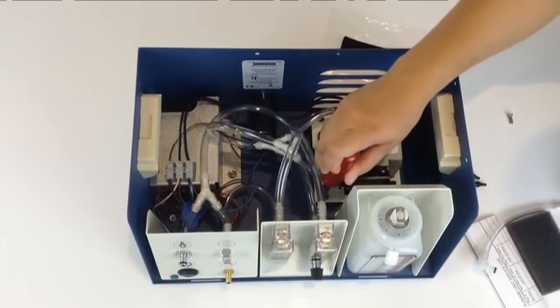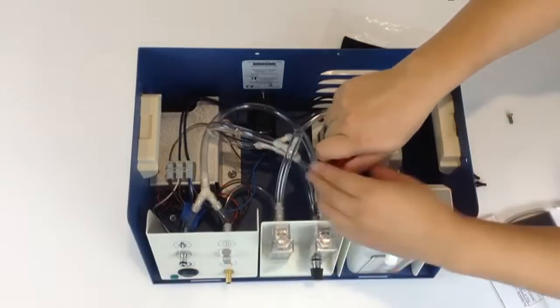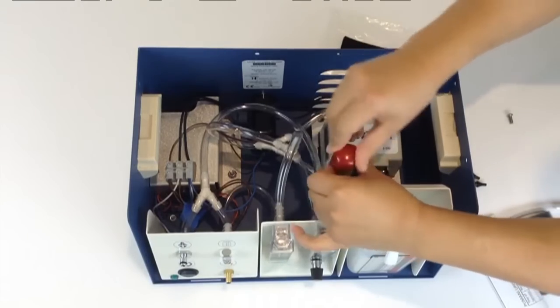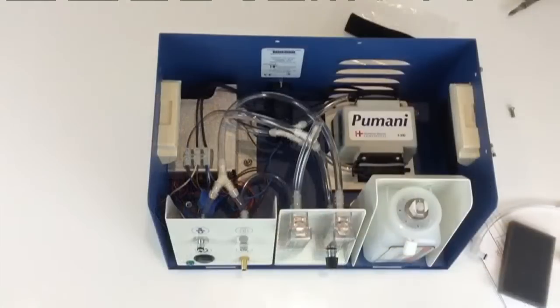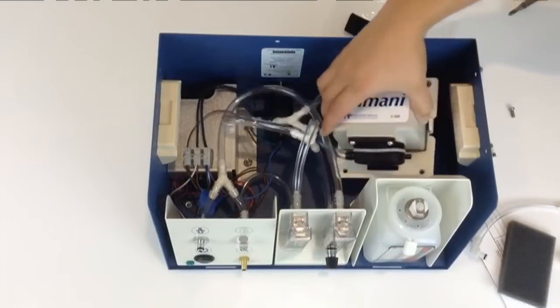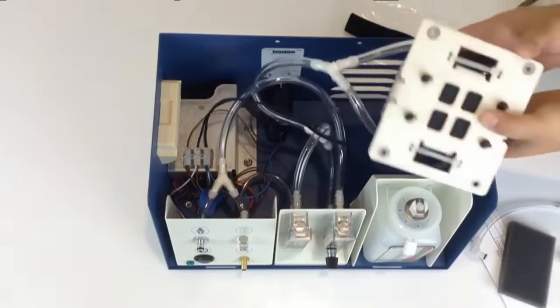To remove the filter, you'll need to remove the pump from the unit. Use a Phillips screwdriver to remove the four screws holding the pump to the unit. Once the four screws are removed from the pump, you can lift the pump up and out of the unit and turn it over.